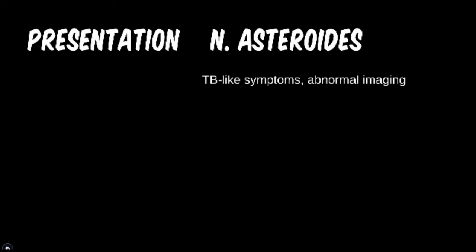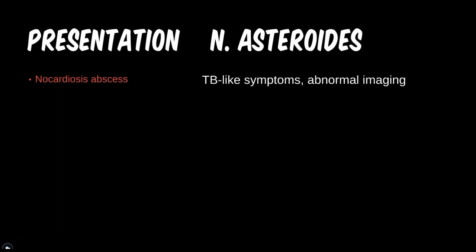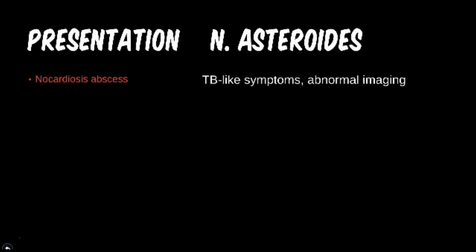The last branching bacterium for this tier is Nocardia asteroides. Here's an interesting presentation: tuberculosis-like symptoms with abnormal imaging. TB symptoms are often generalized at first, ranging from cough and fever to weight loss — not dissimilar from initial Actinomyces infection. However, abnormal imaging such as an X-ray or MRI gives away organ abnormalities, leading to a possible nocardiosis abscess. When this bacterium disseminates to the brain, lungs, or other tissue, abscess formation will show definitive abnormalities on radiologic imaging.